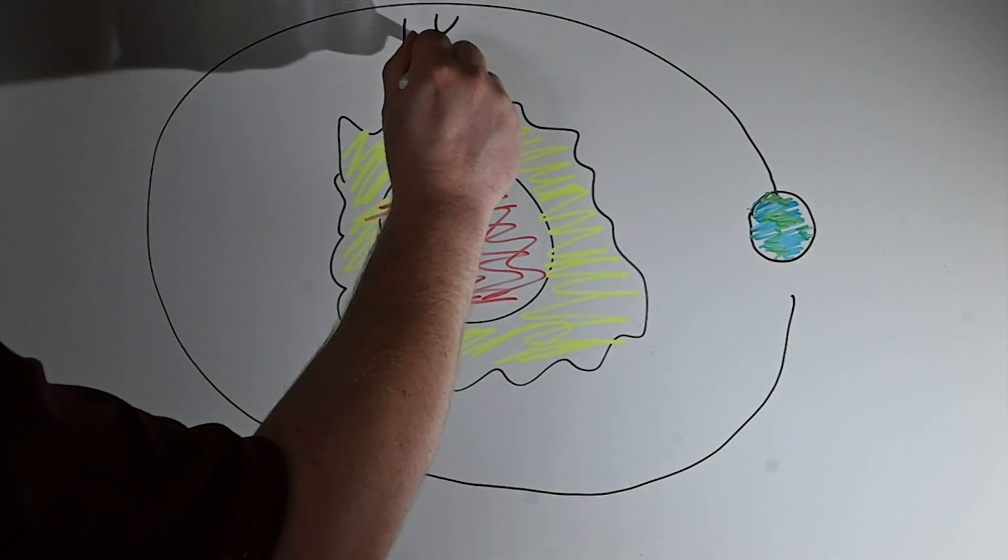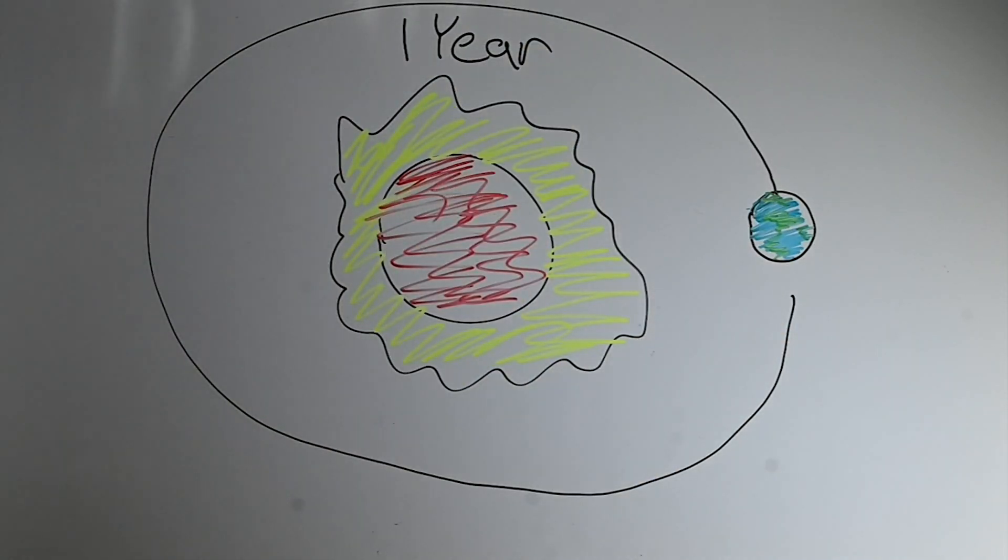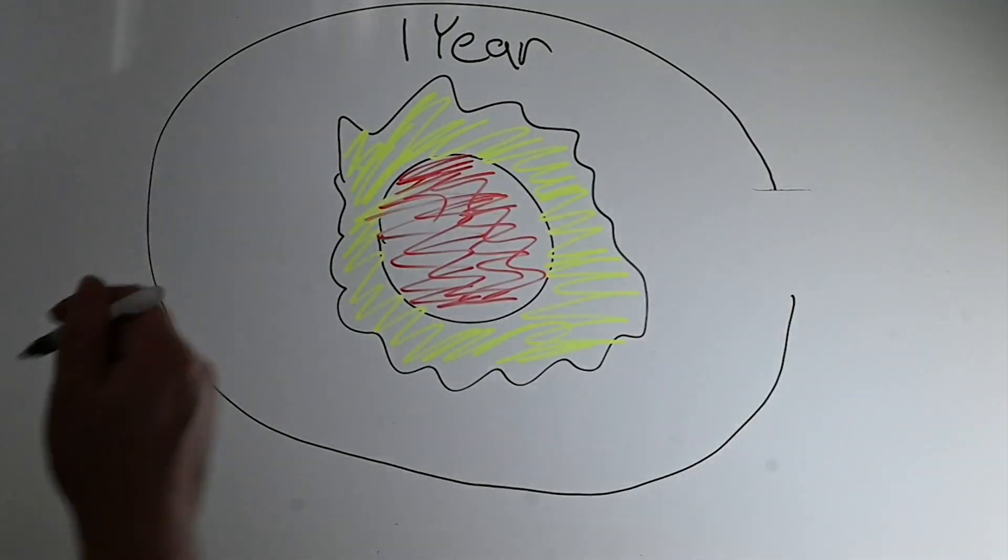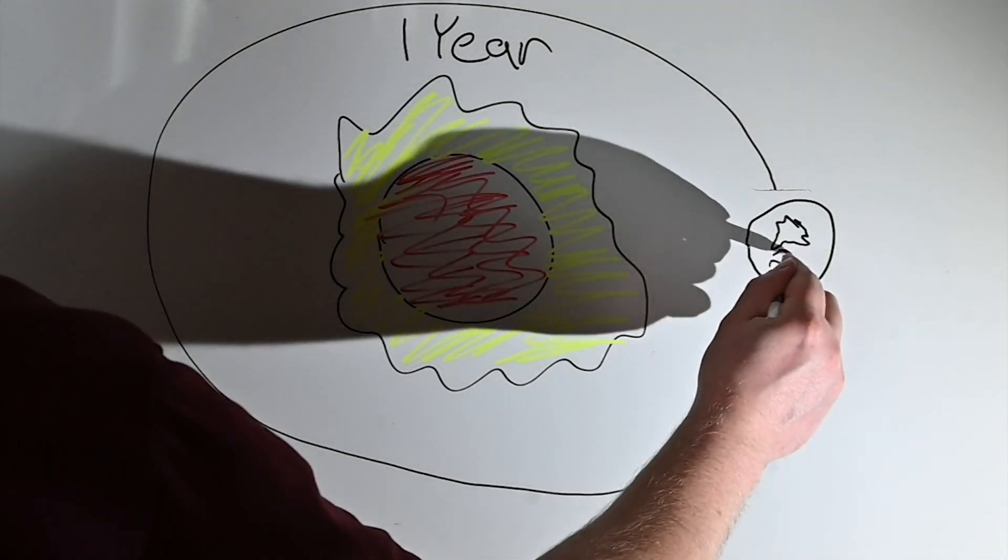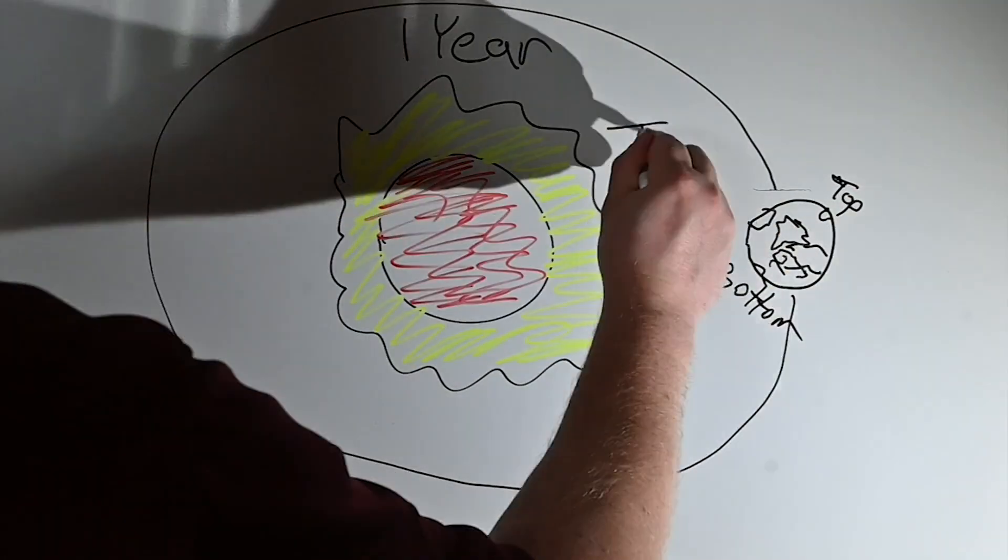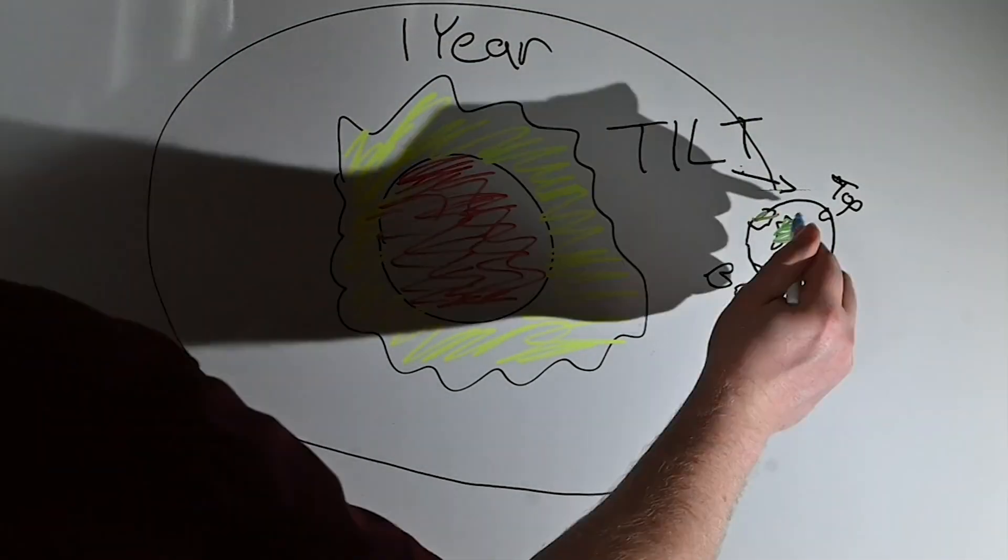We know that it takes a full year for our lovely blue planet Earth to make its orbit around the Sun. Now, I drew the Earth wrong here, straight up and down. The Earth is actually on a tilt of 23.5 degrees. Hold that thought.